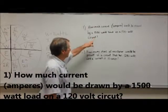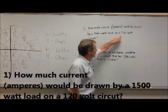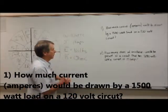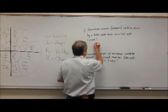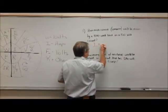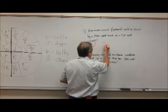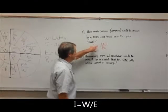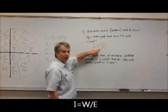So we know watts, we know volts, and we are going to be looking for amps. Our formula is going to be I is equal to W divided by E. So we have amps is equal to watts divided by volts.